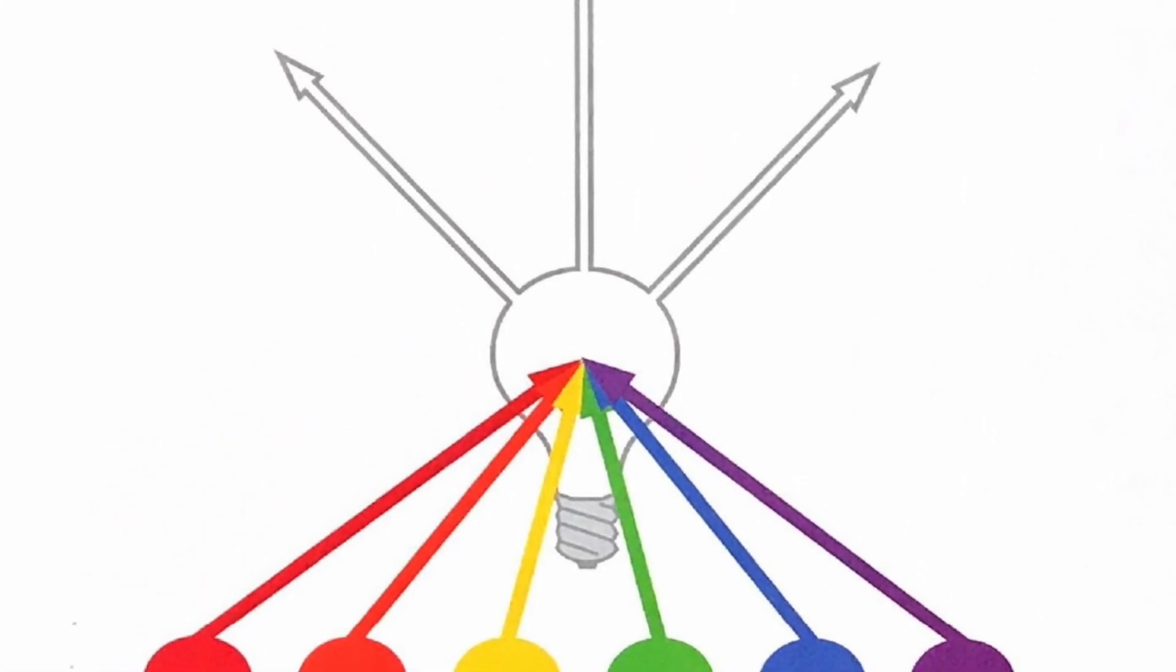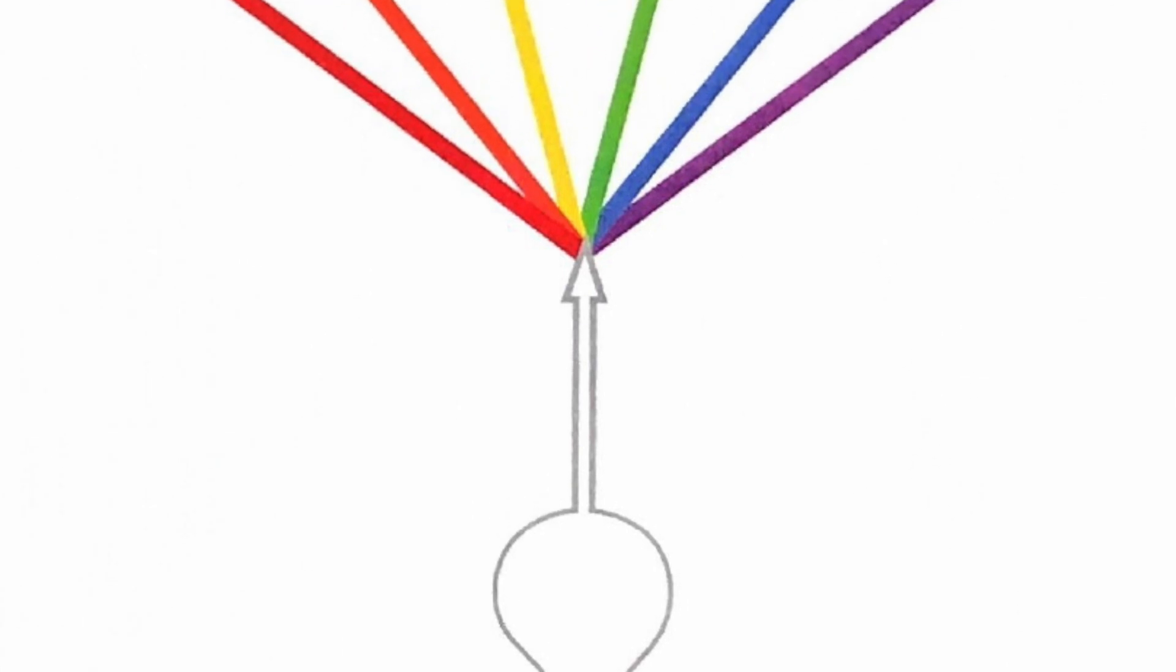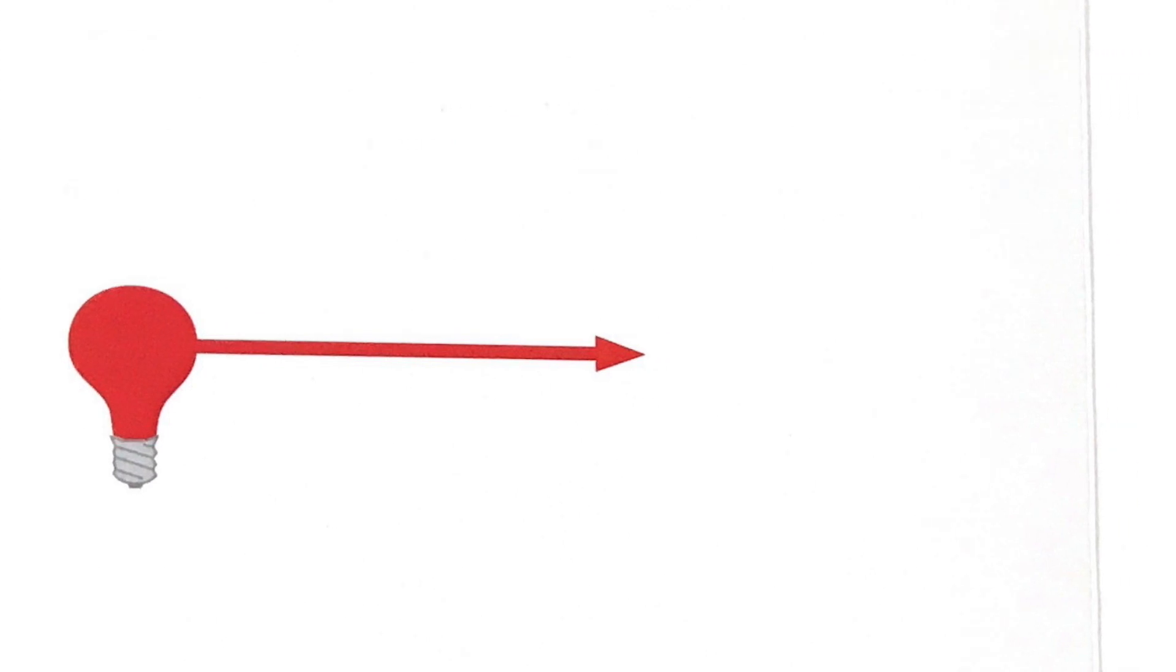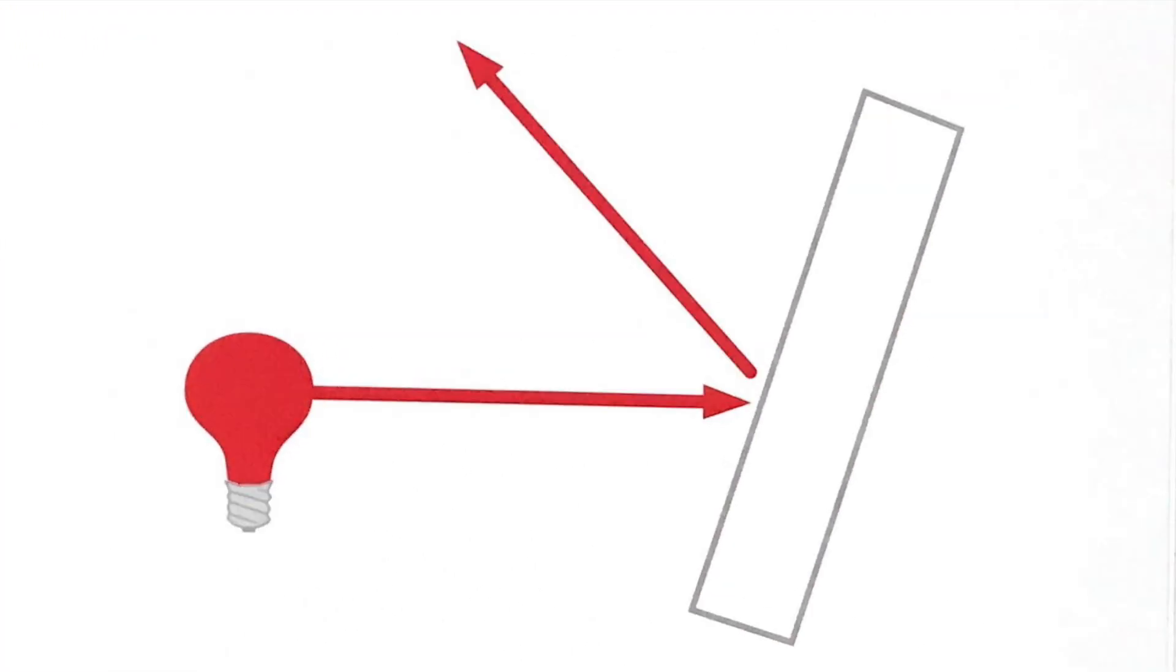White light contains all the colors. Light travels in a straight line until it hits something. Then light can be reflected or refracted.